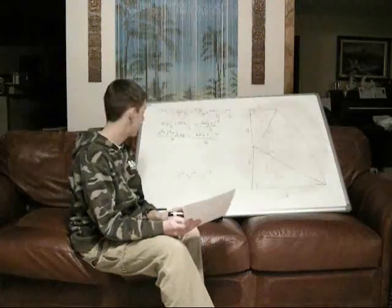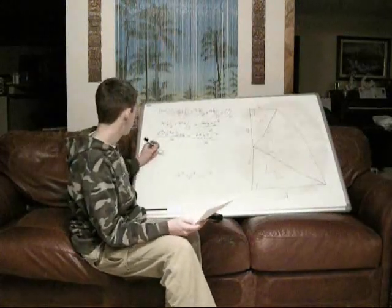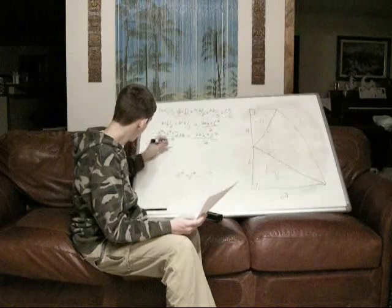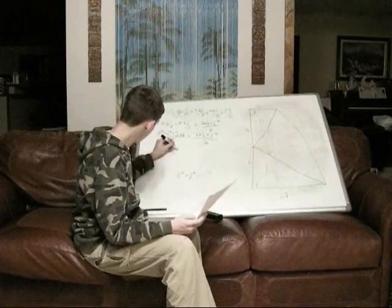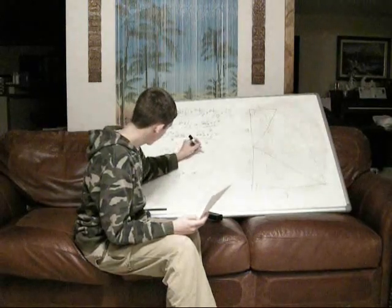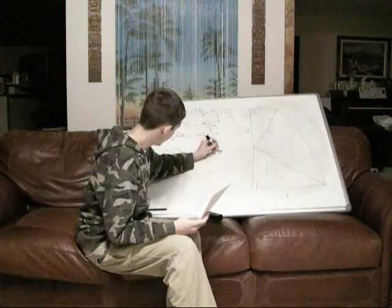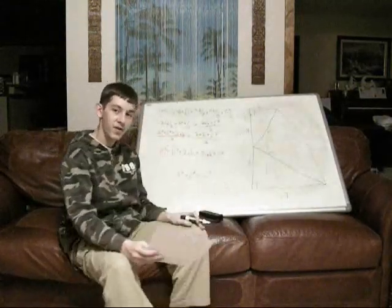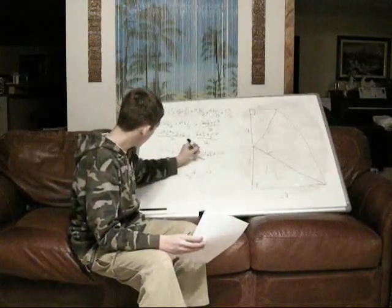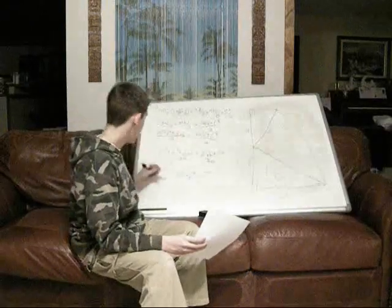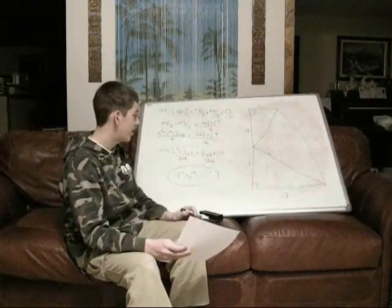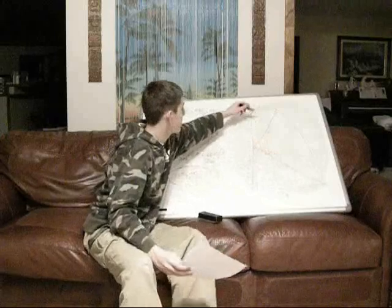That's still not the Pythagorean theorem, so we're going to go even further. We're going to multiply both sides by 2, getting A² + B² + 2AB = 2AB + C². It's still not the Pythagorean theorem, but I'm sure you can all see where we're going. Subtract 2AB from both sides, and you finally get the Pythagorean theorem: A² + B² = C², which applies to these two triangles.